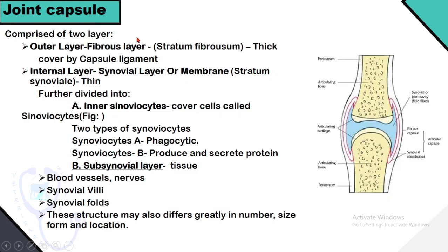The joint capsule is a sac formed by surrounding layers, with two layers: the outer fibrous layer and the inner synovial membrane. The thickness and development of the outer fibrous layer varies greatly, determined mainly by the mechanical load on that area. The inner synovial membrane is divided into the inner synoviocyte layer and the subsynovial layer. The inner synoviocyte layer contains cells called synoviocytes — Type A, which are phagocytic, and Type B, which produce and secrete proteins. The inner synovial membrane lines the joint cavity and contains blood vessels, nerves, synovial villi, and synovial folds.